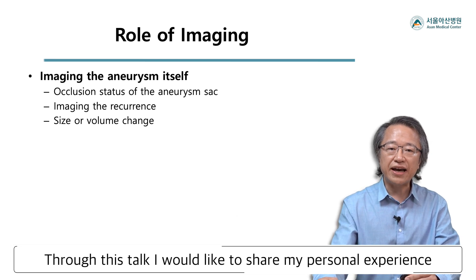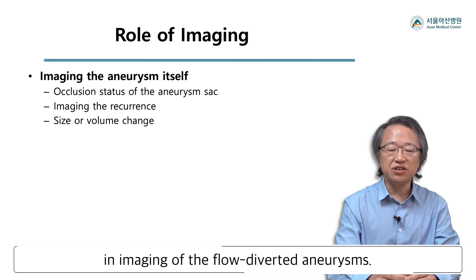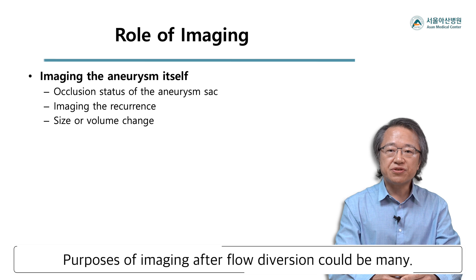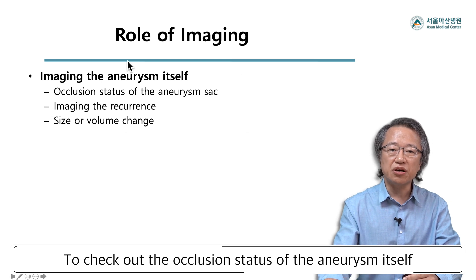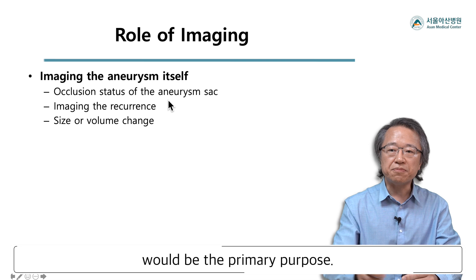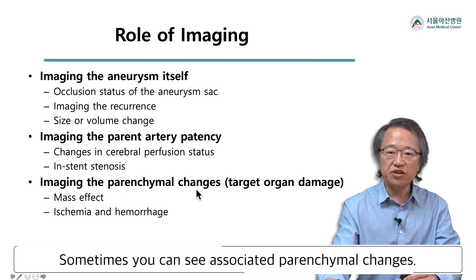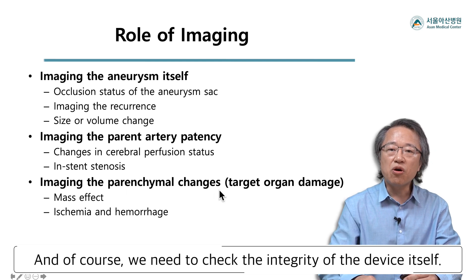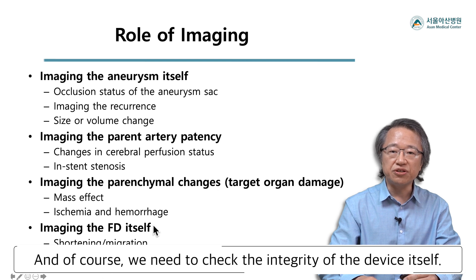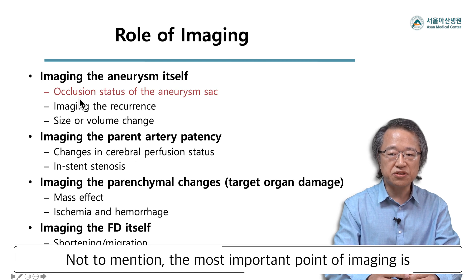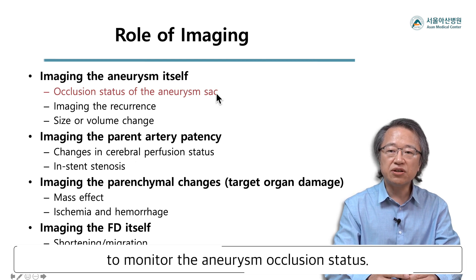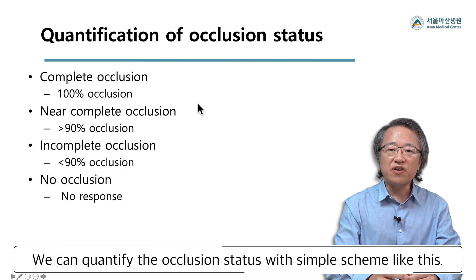Through this talk, I would like to share my personal experience in imaging of the flow-diverted aneurysms. Purposes of imaging after flow diversion could be many. To check the occlusion status of the aneurysm itself would be the primary purpose, and to see the parent artery patency could also be very important. Sometimes you can see associated parenchymal changes, and of course we need to check the integrity of the device itself. The most important point of imaging is to monitor the aneurysm occlusion status, which we can quantify with a simple scheme.